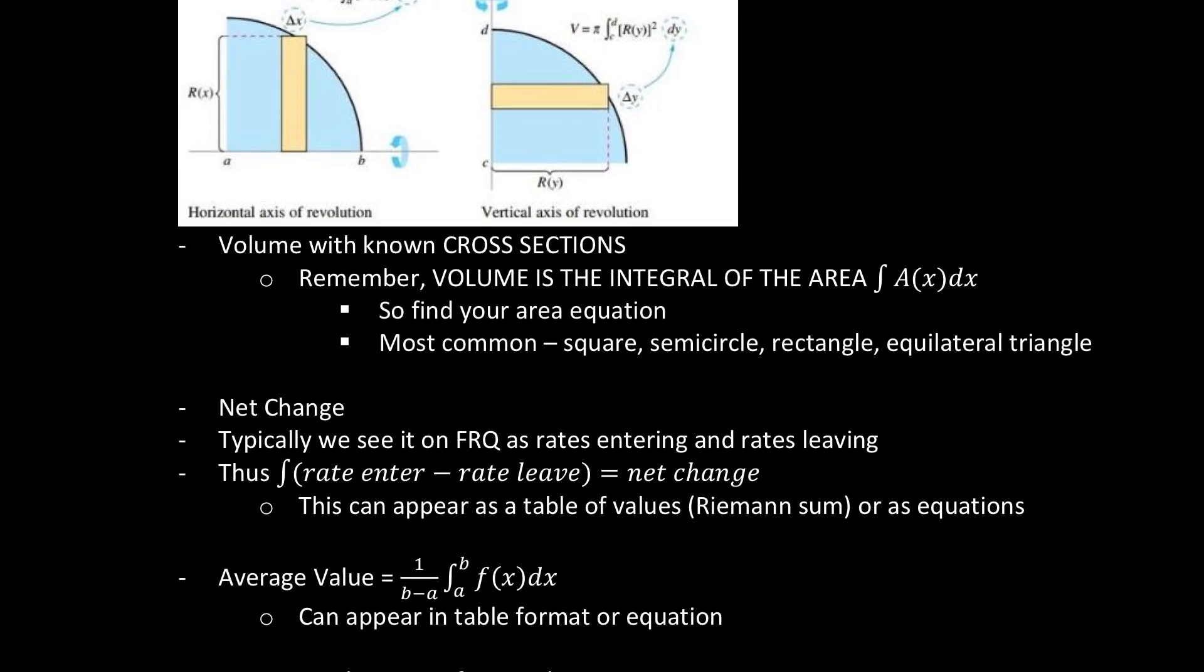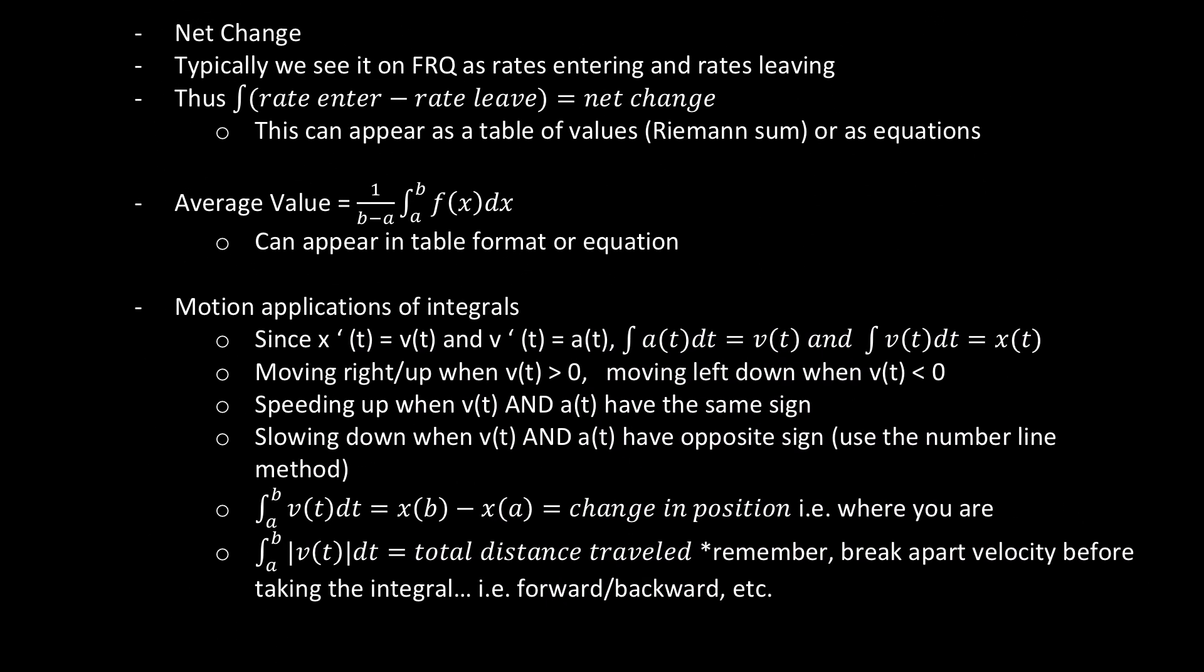Moving on to net change. Net change is typically, we see it on FRQ, as rates entering, rates leaving. So you'll have the integral of the rate that enters minus the rate that leaves. That's going to give you the net change or total amount of people, fish, whatever they're asking for, cars that enter a parking lot. So this can appear also as a table of values. We'll have to do Riemann sums to find this. They've also done one where the table of values are Riemann sum, and one such as the enter or the leave, and then the other one with an equation. So you've got to use both in one situation. Average value is 1 over B minus A, from the integral from A to B. So if they ask for the average, that's what you can do for the average value of it. And this can appear in both a table format or an equation.